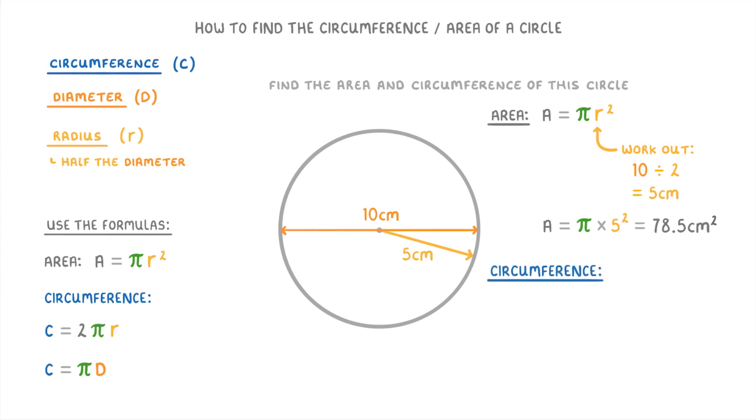Then for the circumference, we can use either equation because we now have the radius and the diameter. But if we go for the diameter one, which is circumference equals pi d, then we just put pi times 10 into our calculator. So the circumference is 31.4 centimeters.